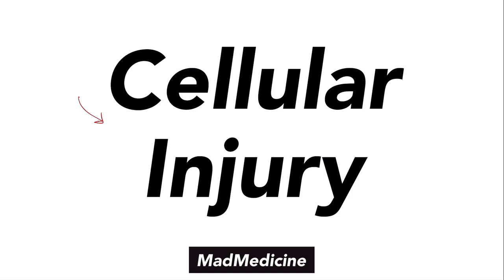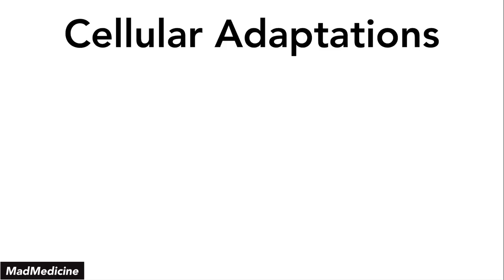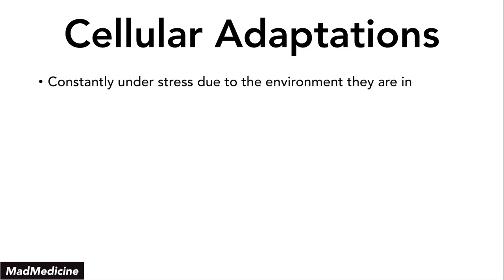With that being said, let's discuss cellular injury by revisiting the concept of cellular adaptation. When it comes to our cells, they are constantly under a stressful environment because of what they're being exposed to. One example of this is our stomach lining, which is constantly being exposed to hydrochloric acid — a very acidic environment that can easily corrode away our stomach epithelium. But our cells in that area have developed cellular adaptations in order to adapt and live; otherwise, our stomach would be eaten alive by the acid it's producing on its own.